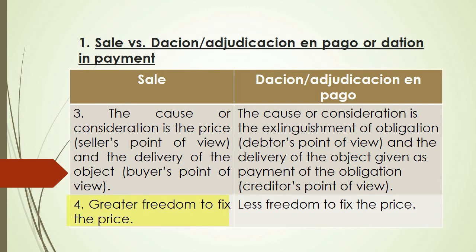The fourth distinction between the two is that in the case of sale, there is greater freedom to fix the price — there is this element of negotiation. But in the case of Dation in Pago, there is less freedom to fix the price, because there is already an existing debt. Usually, the amount of the debt becomes the price of the property given as payment by the debtor. And sometimes the value of the property could be less than the obligation, resulting in only partial extinguishment or partial payment.